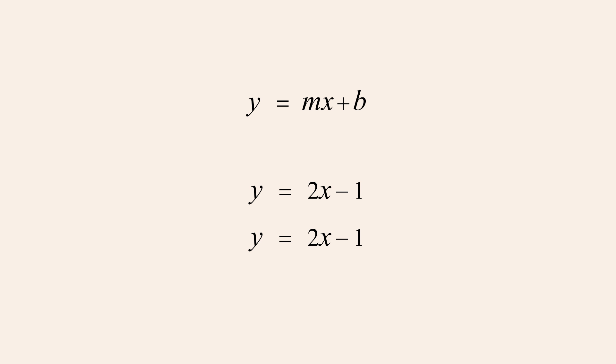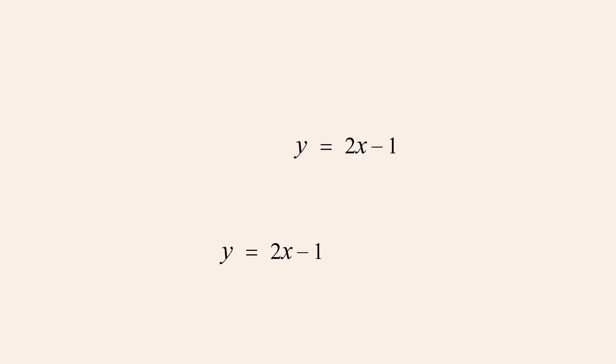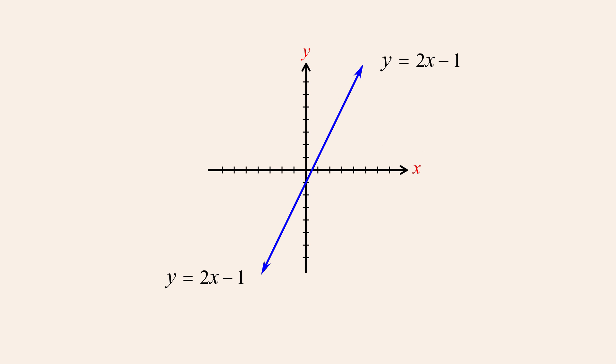If the equations of the system both describe the same line, then they must have the same slope and y-intercept. So when written in slope-intercept form, the equations will be identical. Therefore, the system has an infinite number of solutions. Since the system has one or more solutions, it is consistent, and since both equations describe the same line, the equations are dependent.